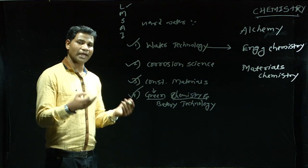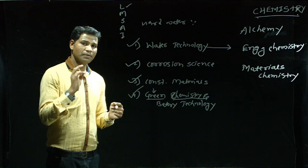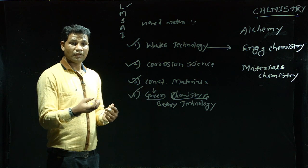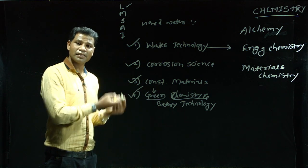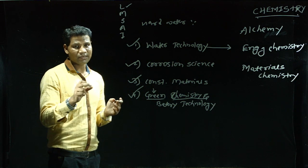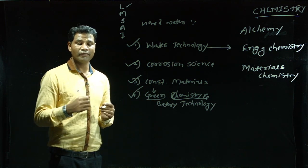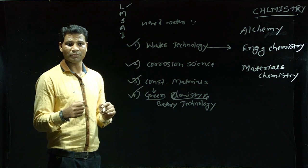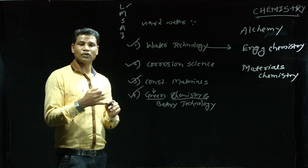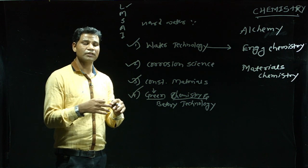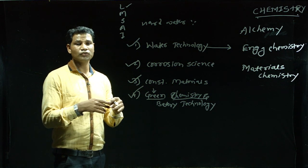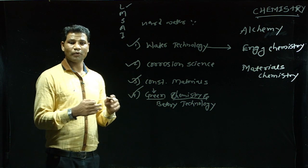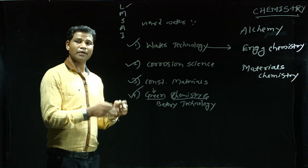The first principle is maximize atom economy — whatever expenses we make, we must get the complete benefit from that. Higher atom economy is better. The second principle is prevention of waste — it is better to prevent waste rather than treat or clean it after it is formed. There are 12 principles in total, including: use of safer solvents, use of safer chemicals, use of auxiliaries, use of catalysts, use of biodegradable materials, use of inherently safer chemicals, accident prevention, and pollution control.